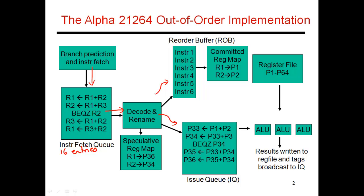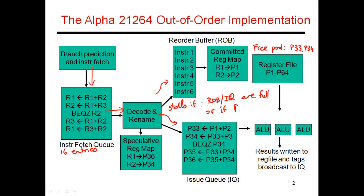Every instruction placed in the reorder buffer also takes a register from the free pool of registers, unless it's a branch or a store instruction. Most other instructions, before they get placed in the reorder buffer, also need a destination register. So the decode stage stalls if the ROB or the issue queue are full, or if the register free pool is empty.